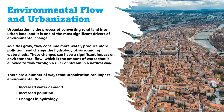Increased water demand leads to increased withdrawals from rivers and streams, which can reduce environmental flow. Urban areas also produce a lot of pollution, including sewage, industrial waste, and stormwater runoff, which can contaminate rivers and streams, making them less suitable for fish and other aquatic life. Urbanization can also change the hydrology of watersheds, including the amount of water available, the timing of flow, and the distribution of sediments, all of which can negatively impact river ecosystems.